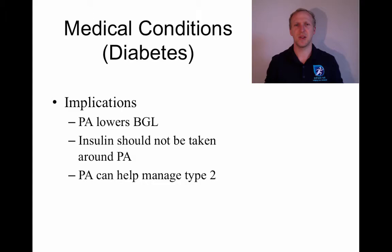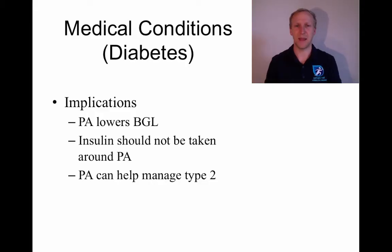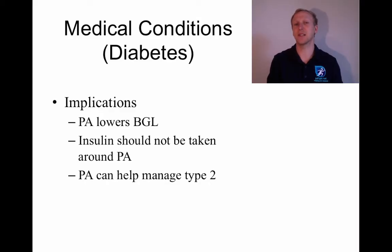Physical activity lowers blood glucose levels because muscle cells open from the inside without needing insulin, allowing blood glucose to transfer into the muscles. For someone with Type 1 insulin-dependent diabetes, if they take insulin before exercise, the insulin lowers blood glucose, and then exercise lowers it even further, resulting in hypoglycemia. The same risk occurs if they take an insulin shot after exercise, which already lowered blood glucose levels.